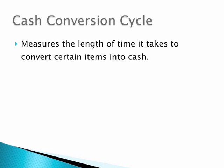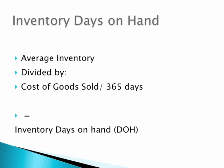The cash conversion cycle takes into account the inventory, the receivables, and the accounts payable, and how many days it takes for a dollar to circulate throughout the business. The first component is inventory days on hand, which is simply the average inventory divided by the daily cost of goods sold — cost of goods sold divided by 365 days — giving you the estimated inventory days on hand, meaning how long inventory is sitting on your shelves before it sells.